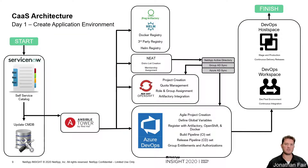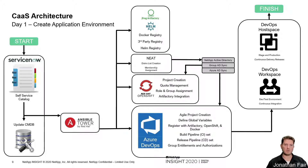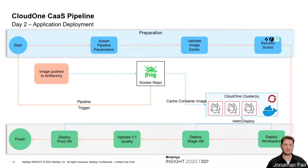Once the user clicks submit, ServiceNow will create the CIs in our CMDB and kick off our playbooks in Ansible Tower. Our playbooks will then create a Docker repository, Active Directory groups for developers, leads, operations, and DBAs to manage access and perform approvals. It creates OpenShift projects with roles assigned to those Active Directory groups. An Azure DevOps project is created with repos, service connections, variable groups, and pipelines. Finally, the workspace and host spaces are created — the workspace is the development namespace, and the host spaces are the stage and production namespaces.